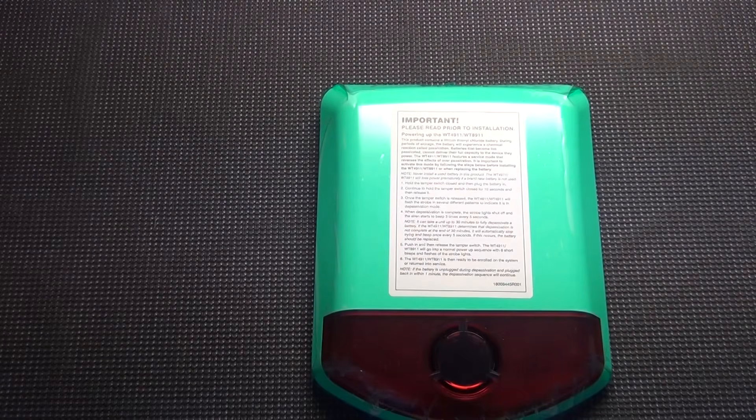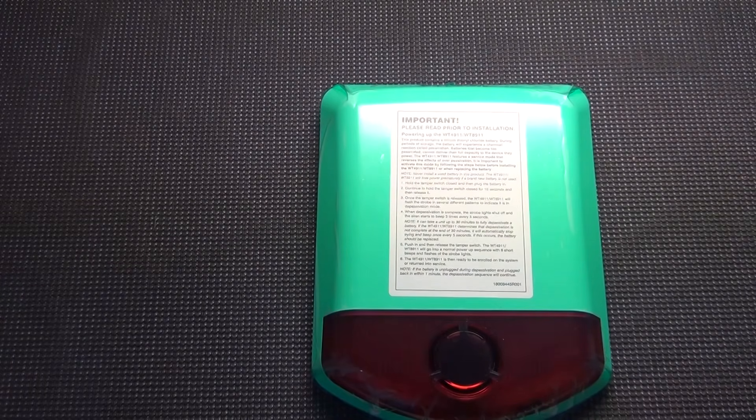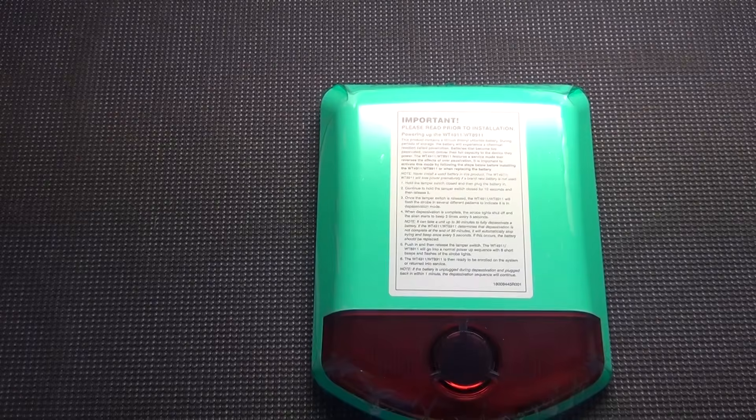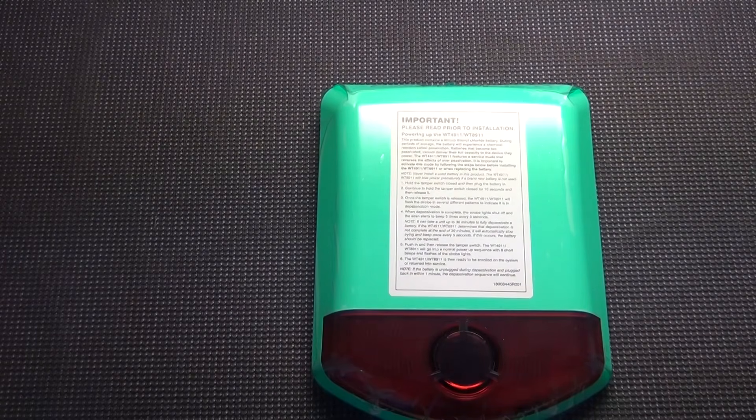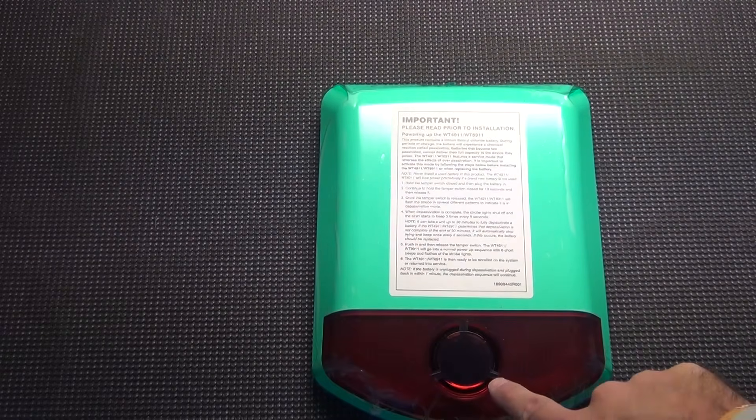Here we have the DSC-WT4911R, which is a red strobe outdoor siren wireless for the DSC-Alexor and Impasa systems. If you have a 4911B, that just typically means you have a blue strobe.